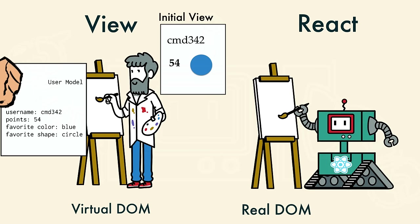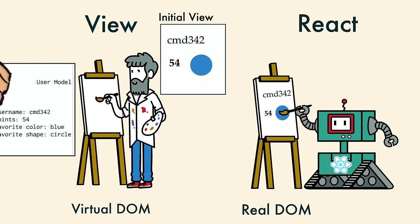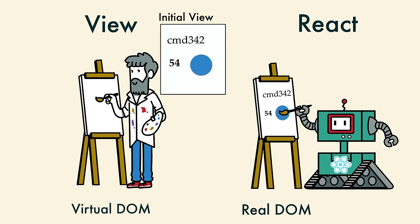It could remember exactly what was already painted in the real DOM. At first, the DOM was empty, so it knew to paint the whole thing. It could paint very fast, because it was a robot.